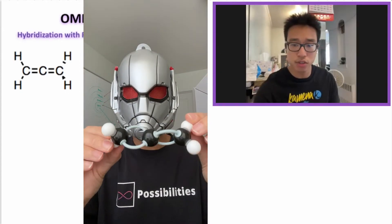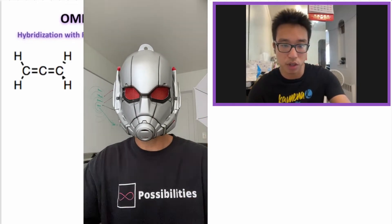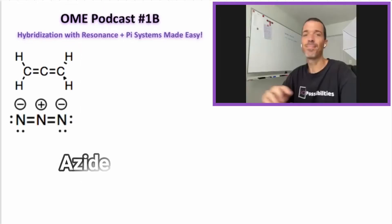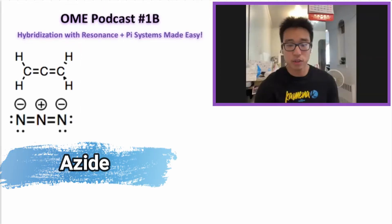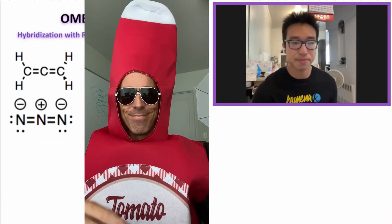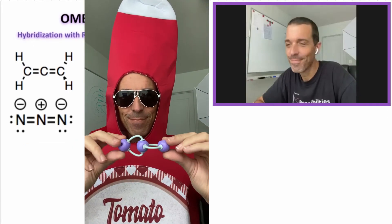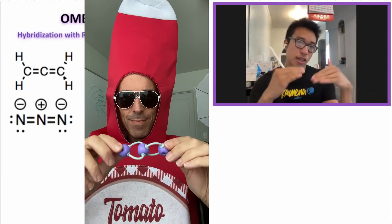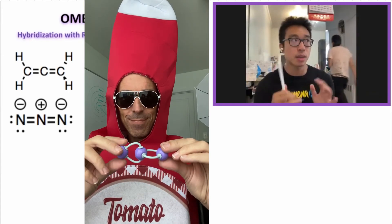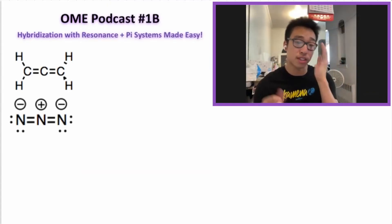There's also another molecule called azide, which is very cool. It looks like allene but it's really complicated, as you'll see. We want to compare and contrast these two molecules so you can apply what we talked about in the previous video to these example problems.